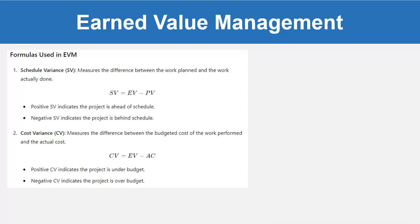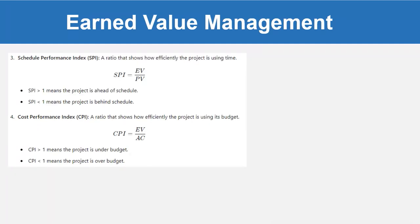Cost Variance (CV) measures the difference between the budgeted cost of the work performed and the actual cost. The formula is: CV = EV minus AC. A positive CV indicates the project is under budget, and a negative CV indicates the project is over budget.